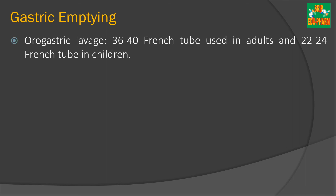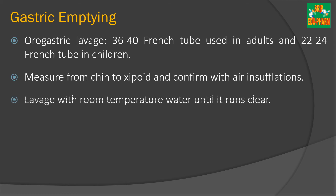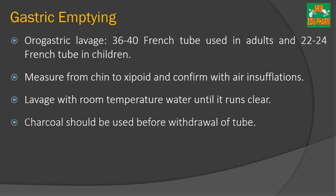Another method for gastric emptying is orogastric lavage. It is done using a size 36–40 French tube for adults and a size 22–24 French tube in children. The length of insertion is measured from the chin to the xiphoid and confirmed with air insufflation to avoid insertion into the trachea. The tube is then lavaged with water at room temperature until it runs clear. Charcoal can also be given before withdrawal of the tube to help adsorb toxic substances in the gut.